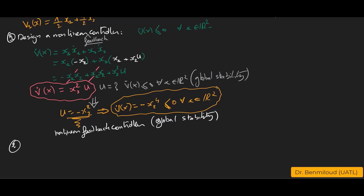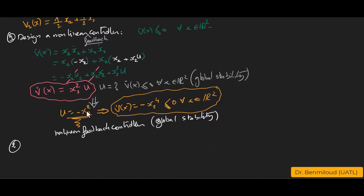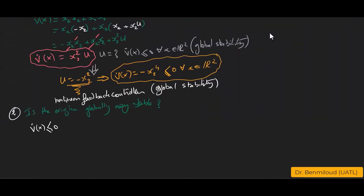Let us move to the next question. Using LaSalle's theorem, is the origin globally asymptotically stable under the proposed control? We would like to extend the previous global stability result to global asymptotic stability. LaSalle's theorem requires a compact set Ω such that every solution starting in Ω remains in Ω. In our case, Ω = ℝ² where V̇(x) ≤ 0.